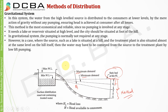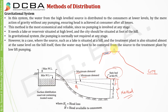However, in a case where the source such as a lake is situated on a hill and the treatment plant is also at almost the same level, water may have to be conveyed from the source to the treatment plant by low lift pumping. For example, if the source and treatment plant are both on the hill, you will have to use some pumping just to transmit water from source to treatment plant. From the treatment plant it can be collected into a distribution reservoir.